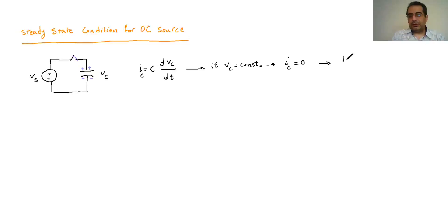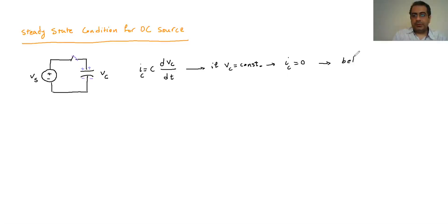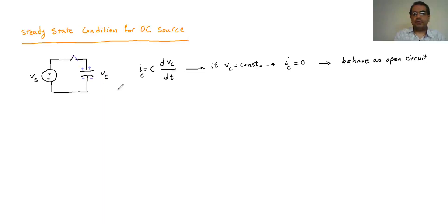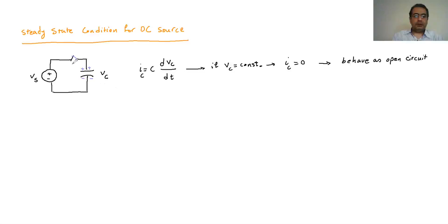So the capacitor behaves as an open circuit. The behavior is the same as if I cut that wire, because it doesn't let any current through. It doesn't matter if I have it there or just cut it. So if the key stays closed for a very long time, I can go ahead and replace that capacitor with an open wire — in other words, just remove it from the circuit.